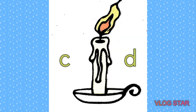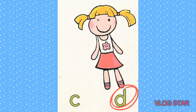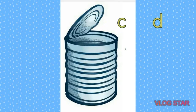Next is candle — K, K, candle — letter C or letter D? You're right, letter C. Doll — D, duck, doll — letter C or letter D? Correct, letter D. Cap — K, K, cap — letter C or letter D? Right, letter C. Can — K, K, can — letter C or letter D? Yes, right, letter C.